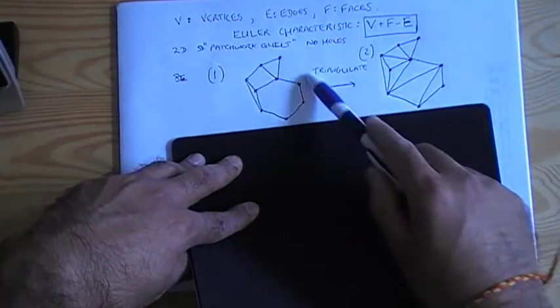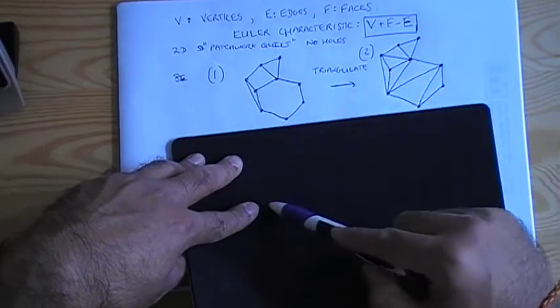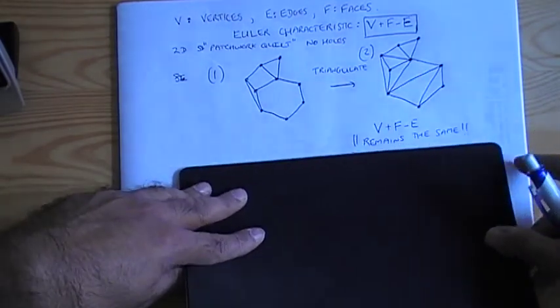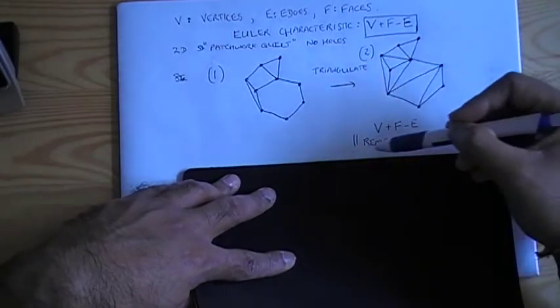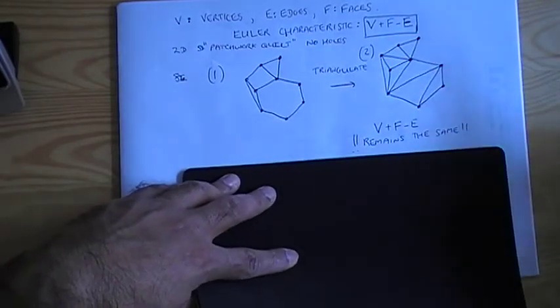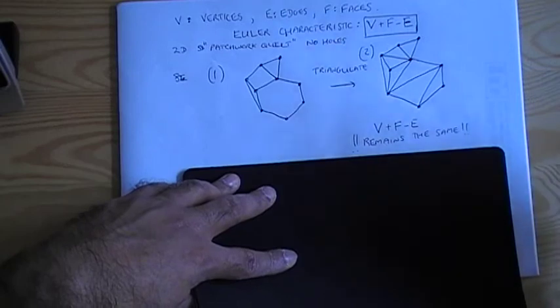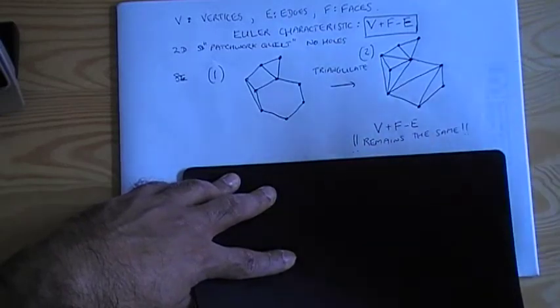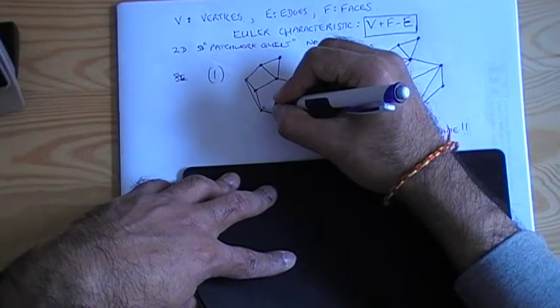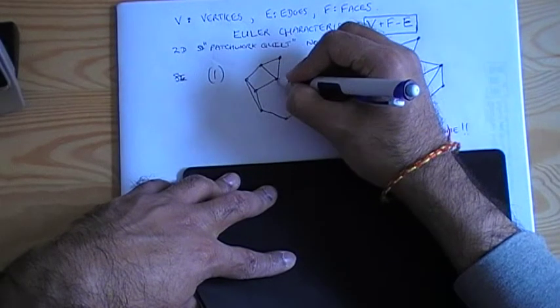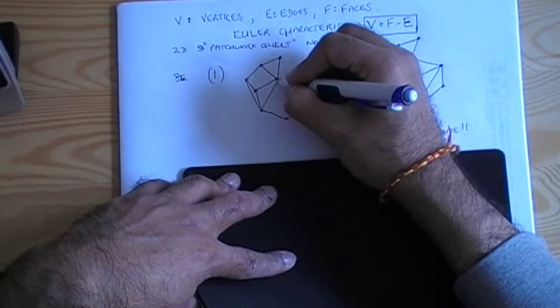So the first step, we start out with our patchwork quilt and then we triangulate it. But the key thing to note is that the Euler characteristic remains the same in this process. And why is that the case?